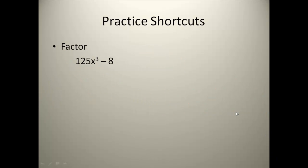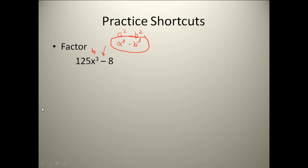Here's our first set of practice problems. Before I even start factoring, there are a few things I look at. I notice this factoring problem only has two terms, so I'm going to first check my two-term shortcuts. Next, it's a minus sign — I've got two options: a² - b² or a³ - b³. The key here is that it's x cubed, so that tells me I'm probably going to use the a³ - b³ shortcut. I then check — can I pull anything out of 125x³ - 8? There isn't anything I can pull out, so I'll rewrite it as two quantities cubed.